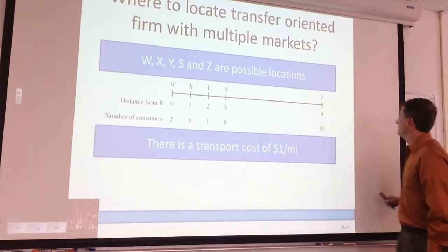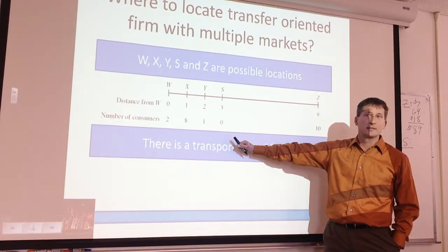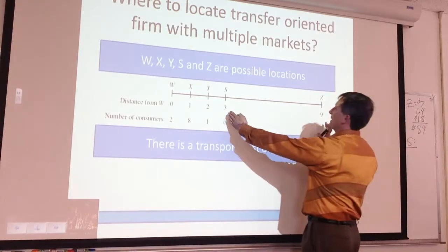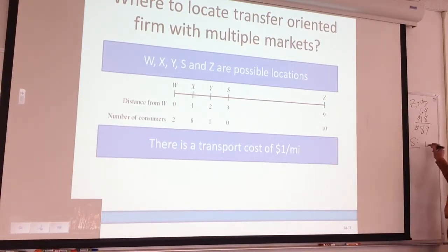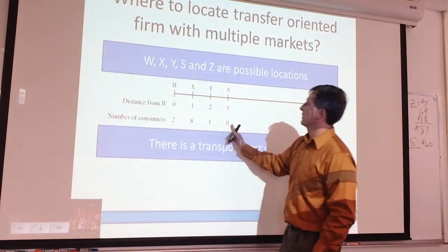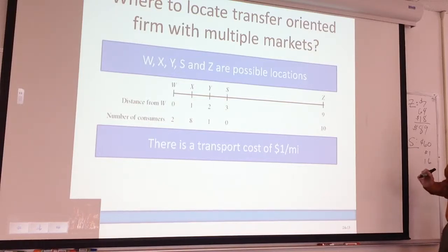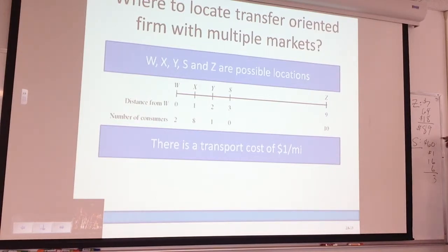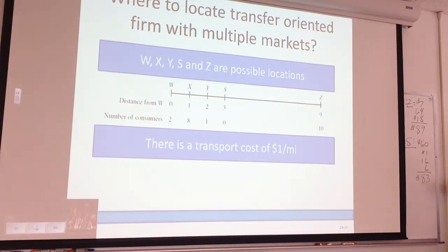Let's go to S. Six miles to go to Z, hitting 10 people — so 60. Then going backwards, picking up one person just a mile away — that's 1. To get to X: 16. And finally to W: 6. So our total cost at S is 60 + 1 + 16 + 6 = 83. Which location is superior? S. Can we do better than S?